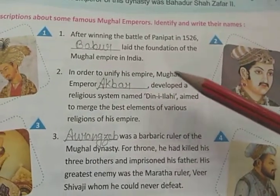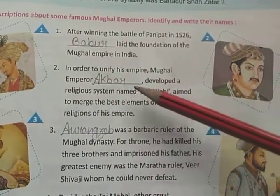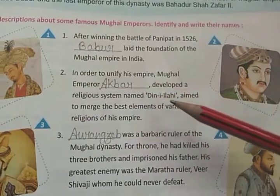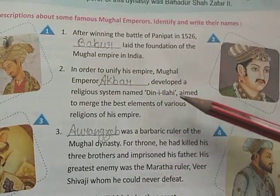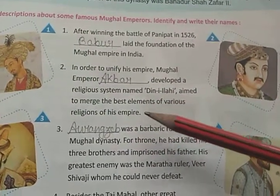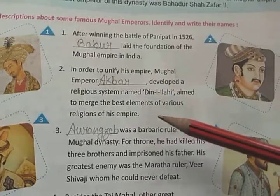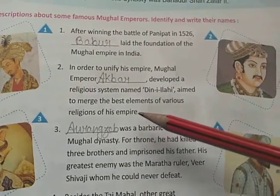In order to unify his empire, Mughal Emperor Akbar developed a religious system called Deen-E-Ilahi, aimed to merge the best elements of various religions of his empire.